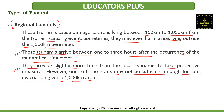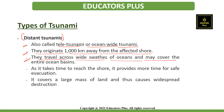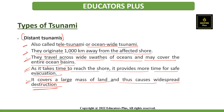The next type is distant tsunamis, also called tele-tsunami or trans-oceanic tsunami. They originate 1000 km or more away from the affected shore and travel across wide swaths of oceans, potentially covering entire ocean basins. As it takes time to reach the shore, it provides more time for safe evacuation, but it covers a large mass of land and can cause widespread destruction.